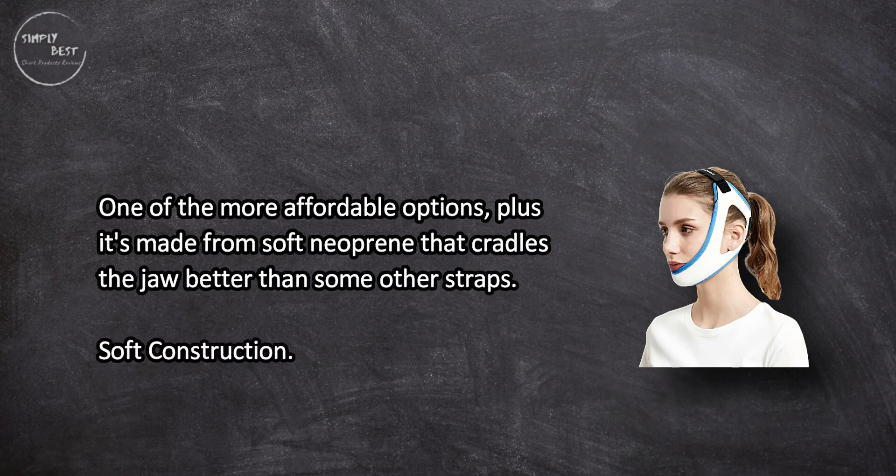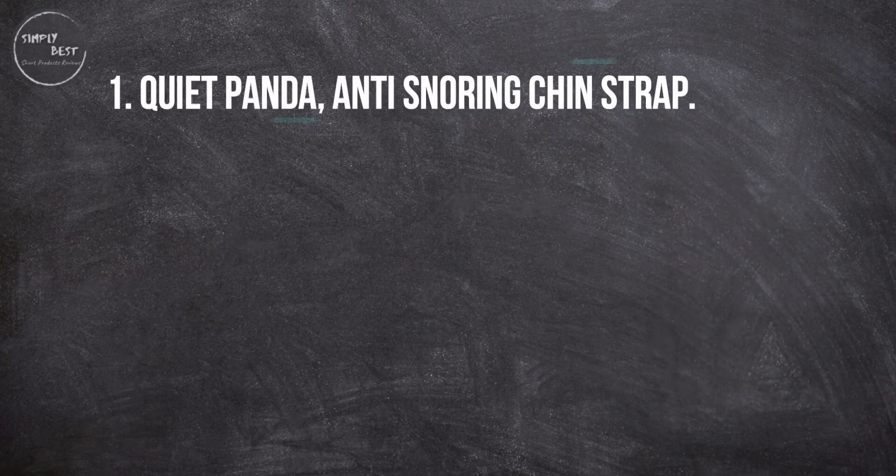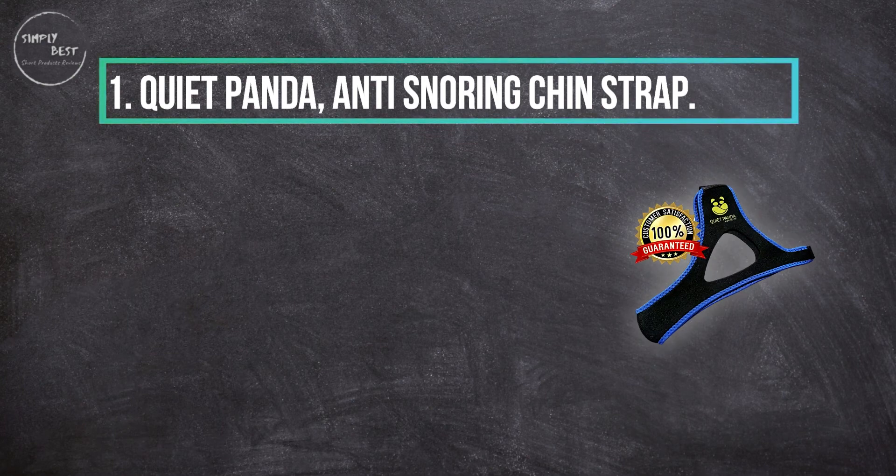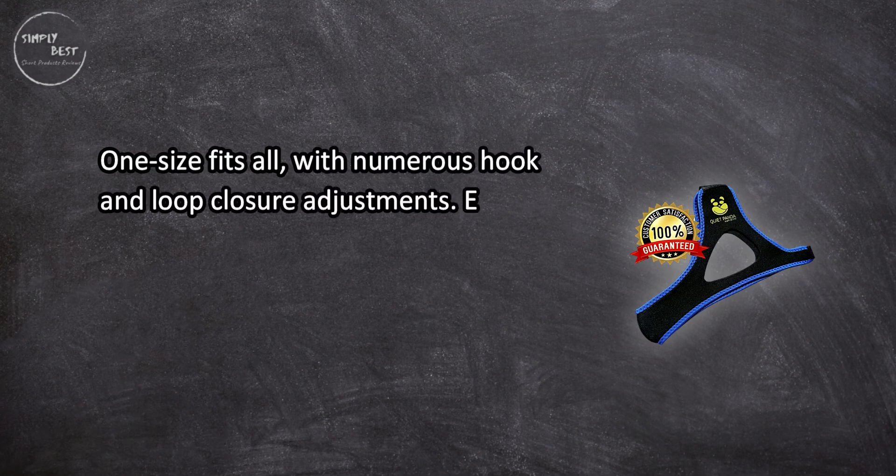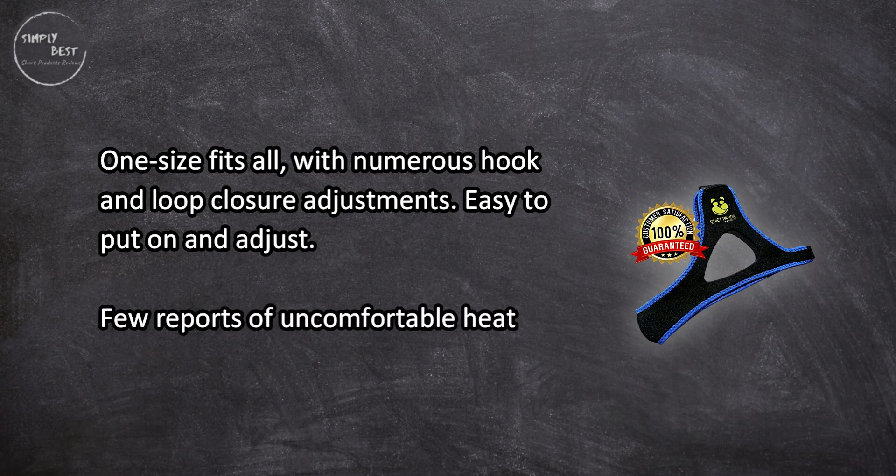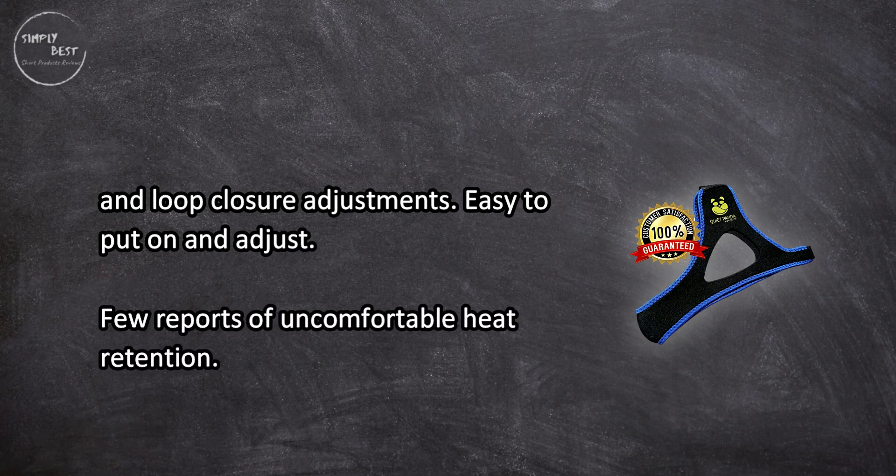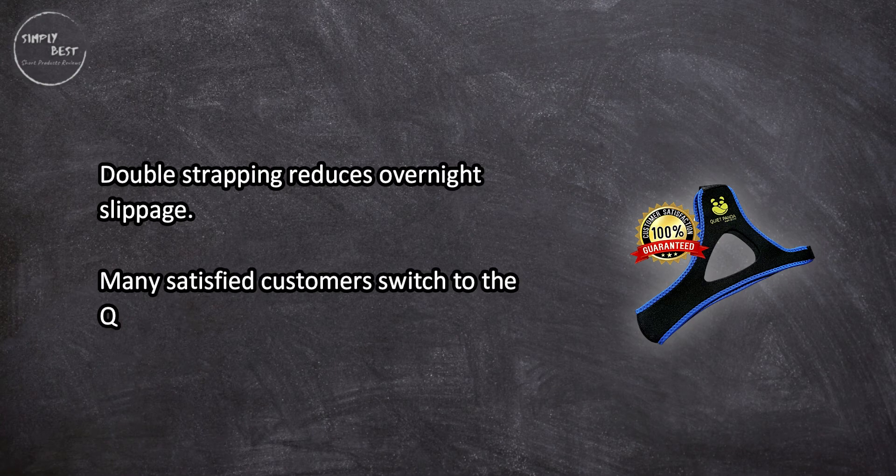At number one, Quiet Panda Anti-Snoring Chin Strap: one size fits all with numerous hook and loop closure adjustments, easy to put on and adjust. Few reports of uncomfortable heat retention. Double strapping reduces overnight slippage. Many satisfied customers switch to the Quiet Panda after trying other anti-snoring masks first. Double strapping improves the fit significantly.